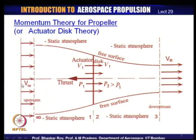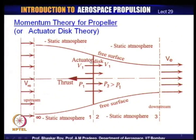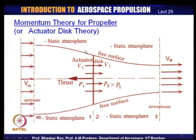The velocity far upstream of the entire domain is V∞, taken at far upstream of the actuator disc. Far downstream of the actuator disc, we have exit velocity V_e. This entire domain has a free surface — it is bounded by this free surface, which is air. Air flows inside this free surface domain, and static atmosphere exists outside this free surface domain.